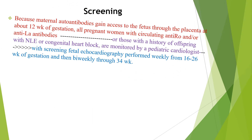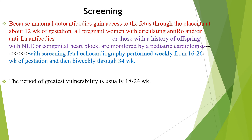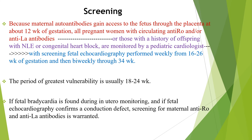Regarding screening, because maternal autoantibodies gain access to the fetus through the placenta at about 12 weeks of gestation, all pregnant women with circulating anti-Ro or anti-La antibodies, or those with a history of offspring with neonatal lupus or congenital heart block, are monitored by pediatric cardiologists with screening fetal echocardiography performed weekly from 16 to 26 weeks of gestation and then biweekly through 34 weeks. The period of greatest vulnerability is usually at 18 to 24 weeks, and if fetal bradycardia is found, echocardiography is used to confirm any conduction defect, and screening for maternal anti-Ro and anti-La antibodies is warranted.